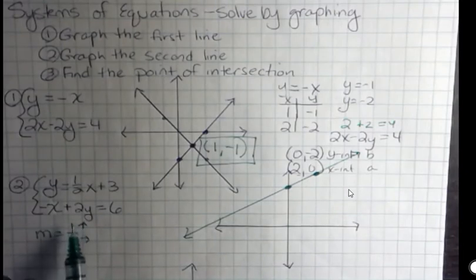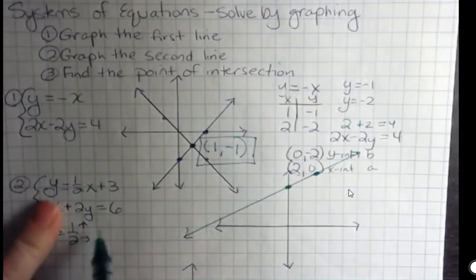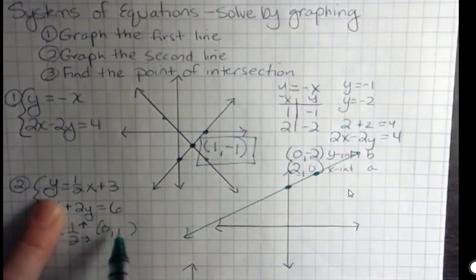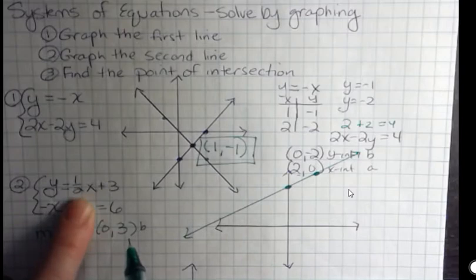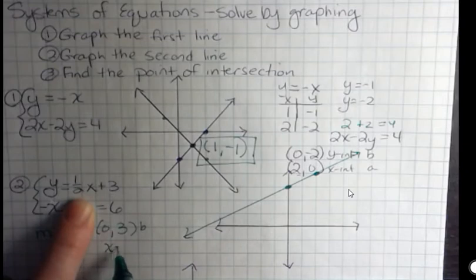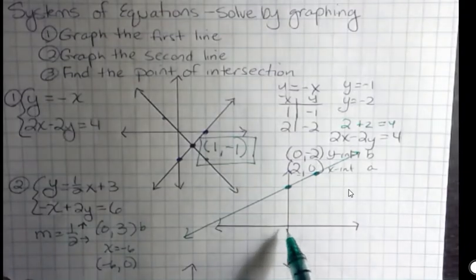Okay, now for my second graph, because it's in standard form where the x and y are on the same side, I'm going to find the intercepts again. What if x was 0? If x was 0, I would divide both sides by 2 and I would get 3. So there's my y-intercept or b. Now what if y was 0? Well, if y was 0, that would drop out and I'd have negative x equals 6. Divide both sides by negative 1 and x equals negative 6. So I have the point negative 6, 0.